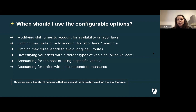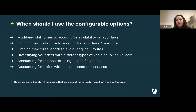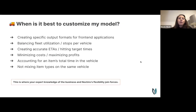When should you reach for these configurable options? Examples include: modifying shift times to account for labor laws or driver availability, limiting max route time or length to avoid long-haul routes, diversifying your fleet with different vehicle types to explore minimizing emissions, accounting for the cost of specific vehicles — like bikes being cheaper than cars — and accounting for traffic with time-dependent measures.